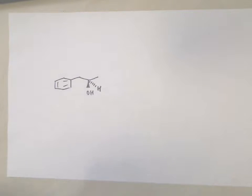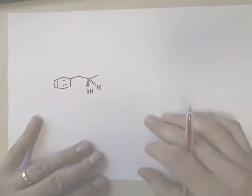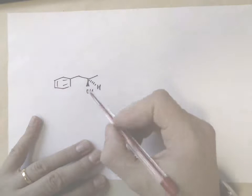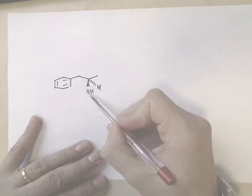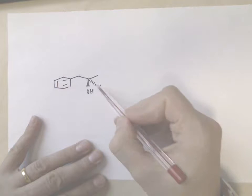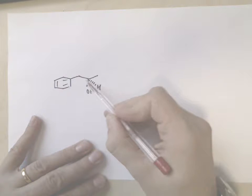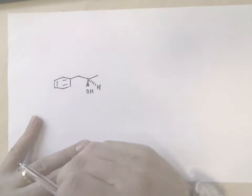Now we have to label the groups according to the priority rules. This is a chiral center because there are four different groups. There's a hydroxyl or alcohol group, there's a hydrogen, there's a methyl, and then there's the rest of this part of the molecule.